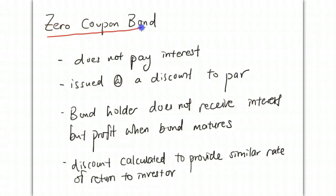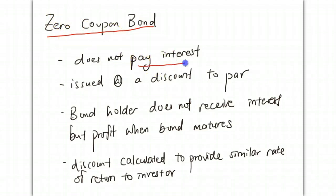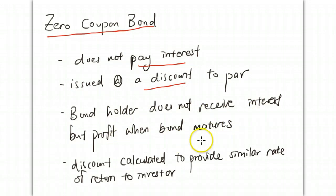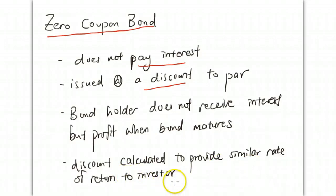We'll be talking about zero coupon bonds. As the name suggests, it has zero coupon, which means it doesn't pay any coupons — it doesn't pay interest. Instead, it is issued at a discount to par. The bondholder does not receive interest but profits when the bond matures, and the discount to par is calculated to provide a similar rate of return to the investor as if he were expecting an interest payment.